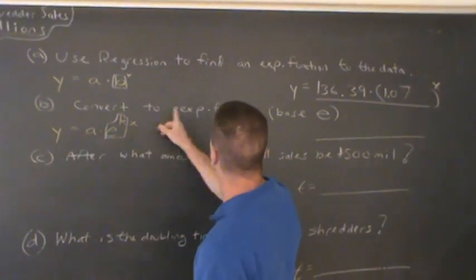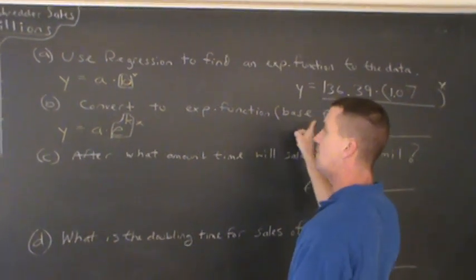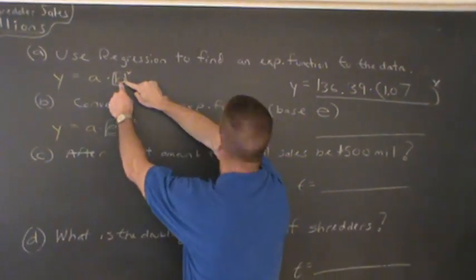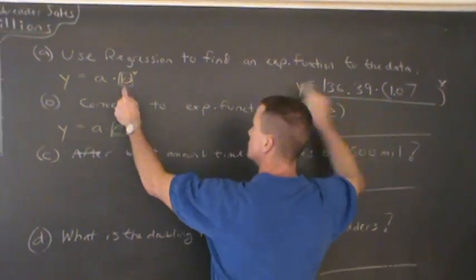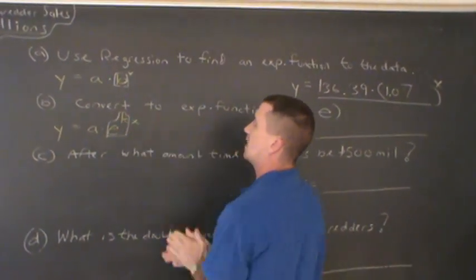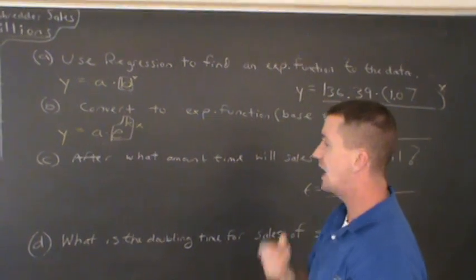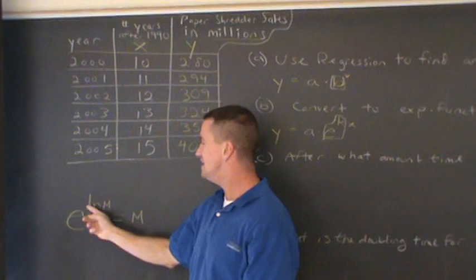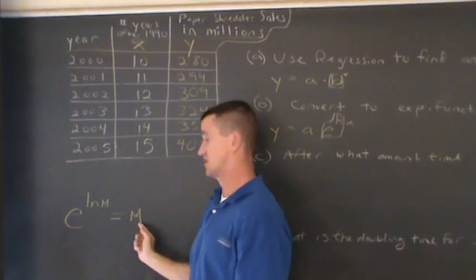Now, in our next step, we're gonna convert this to an exponential function, base e. So somehow, everyone, we gotta turn that 1.07 into an e raised to some other decimal. Now, how can we do that? We're gonna use this right here. You remember this? e to the ln of, say, m equals m. e to the natural log of m is m.